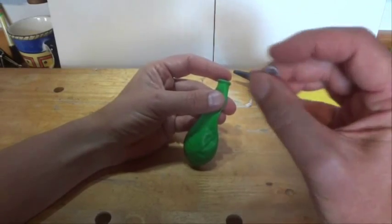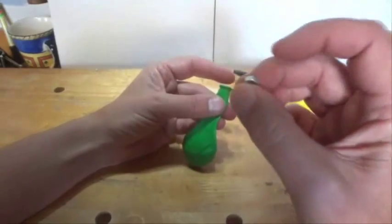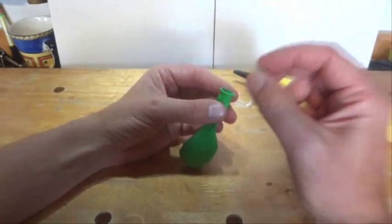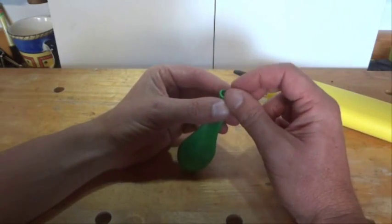and a very small nut. This one's got six sides, it's a hexagonal nut, so we're going to pop that in the balloon